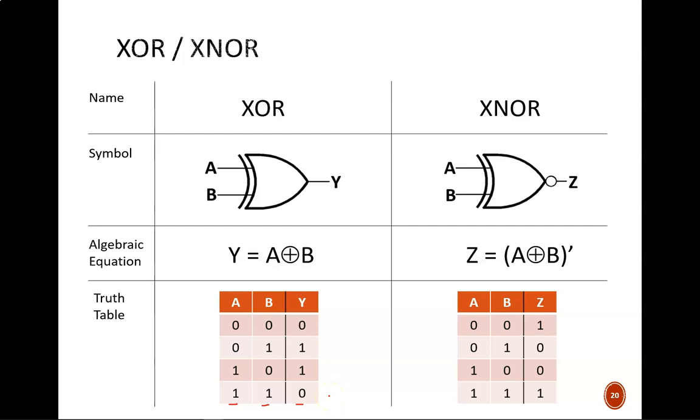The gate symbol for exclusive OR is shown here. It looks just like the OR symbol, but with an extra arc in front. The algebraic operator looks like this, with a plus sign inside a circle.